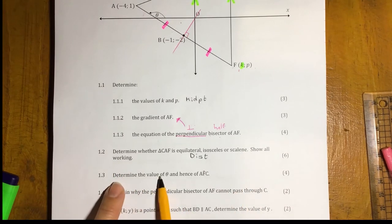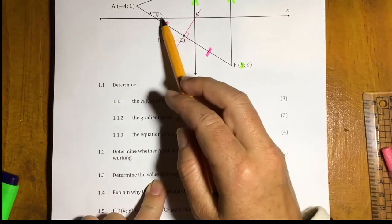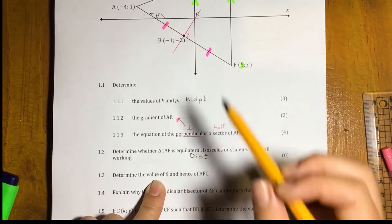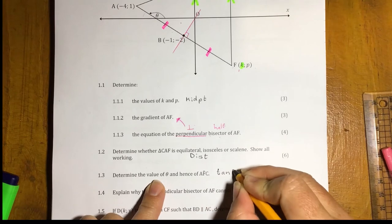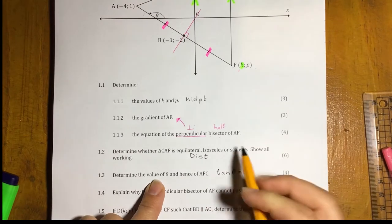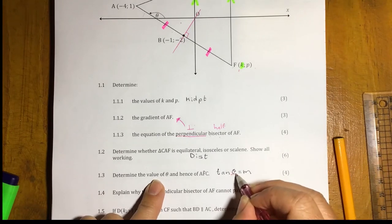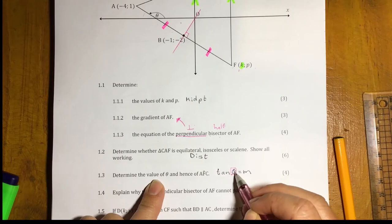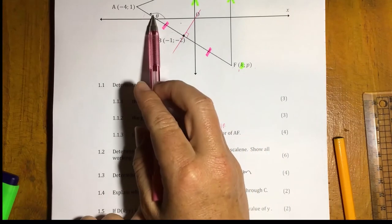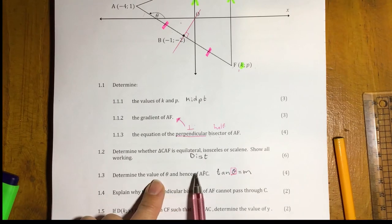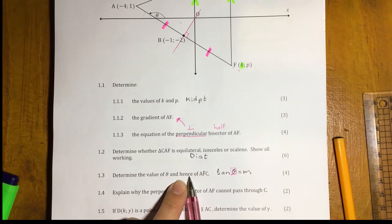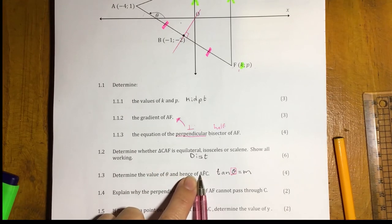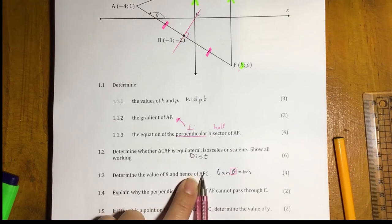1.3. Determine the value of theta and hence angle AFC. So, theta, we were told earlier, is the angle of inclination. So, I know I'm going to use my tan theta equals my gradient, but be very careful because theta here is like a variable. This theta here, I need to decide whether it represents that depending on the gradient of my line there. The second part, hence, means that I need to use that to work out the second part. And this is a complex problem. So, I'm going to let you give it a try on your own before I give you any hints there.